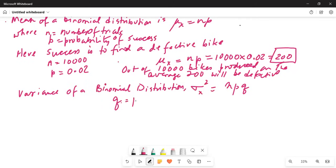q is the probability of failure or equal to 1 minus p, where p is the probability of success.